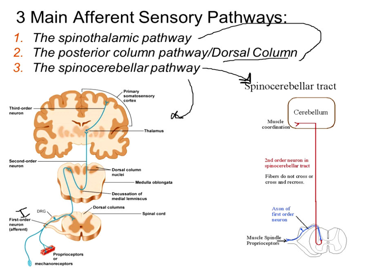The third pathway goes to the cerebellum, which is about coordination and smoothing out muscle contractions. This pathway takes information from muscle spindles and proprioceptors around muscles. Receptors head through the dorsal root, the cell body is in the dorsal root ganglia, and it synapses on the posterior horn near the gray commissure. The second-order neuron heads straight to the cerebellum, crossing via the pons through lateral horizontal pathways.